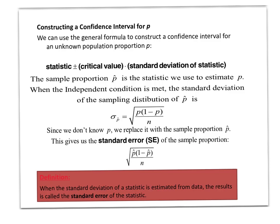So once again, the general formula for a confidence interval is statistic plus or minus critical value times the standard deviation of our statistic. And since we don't know what p is, we're going to use p-hat as a replacement for p in our standard deviation formula. When we do that, we call this the standard error.